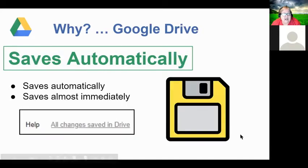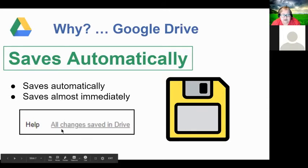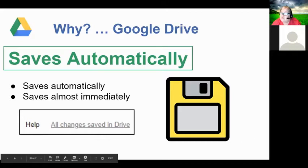Google Drive saves automatically. Up at the top of your document it'll tell you if all changes are being saved in Drive. It's not immediate but it's usually within just a few seconds.